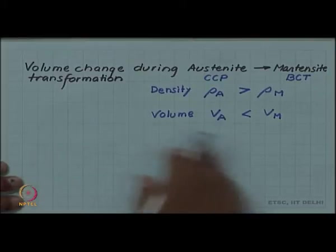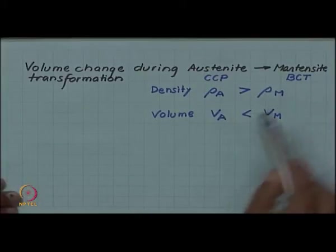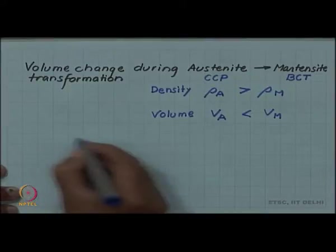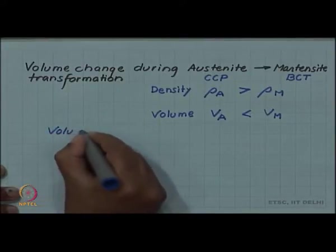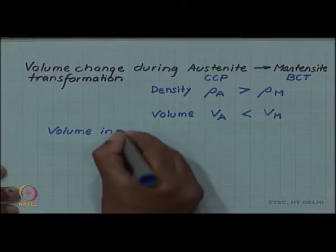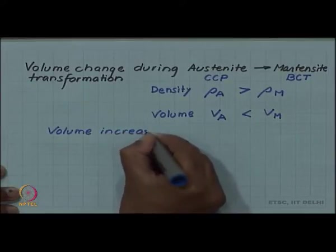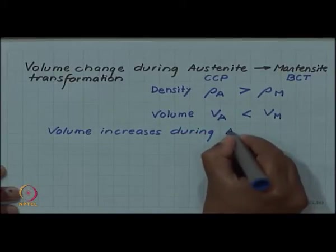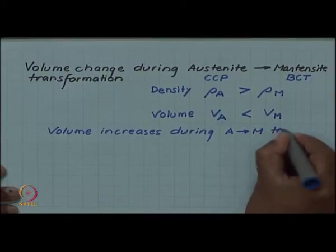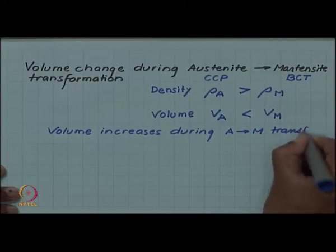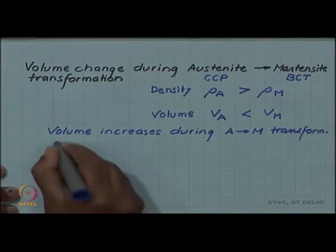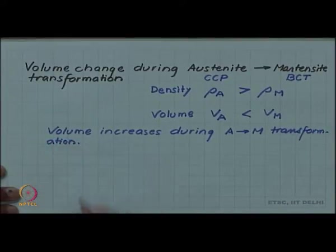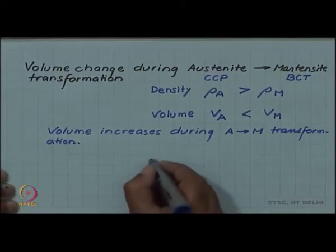If I write by rho the density, density of austenite is greater than density of martensite, or in terms of volume, volume of austenite will be less than the volume of martensite. Which means an expansion takes place when austenite will change to martensite, volume will increase.